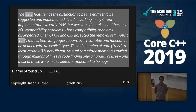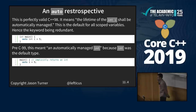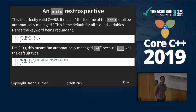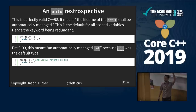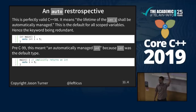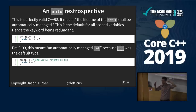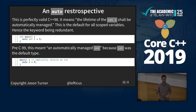Who has been around long enough to have used the C version of auto? This is valid C++98: 'auto int i' means the lifetime of this integer shall be automatically managed. In C99, 'auto i = 5' does not mean deduce the type — it means i is by default an integer, and auto means automatic storage duration. Everything was default int in pre-C99.